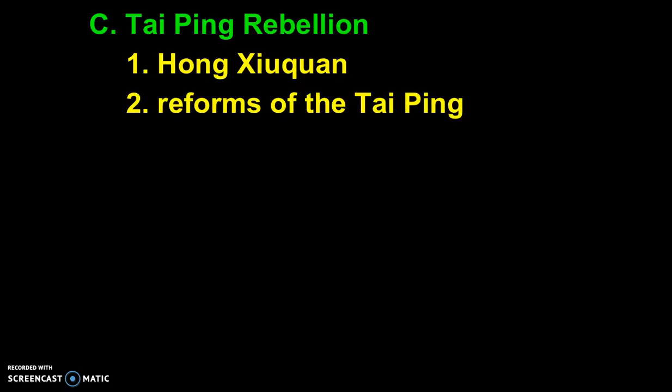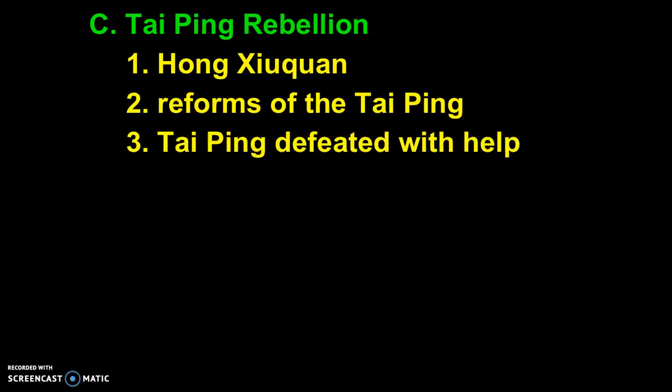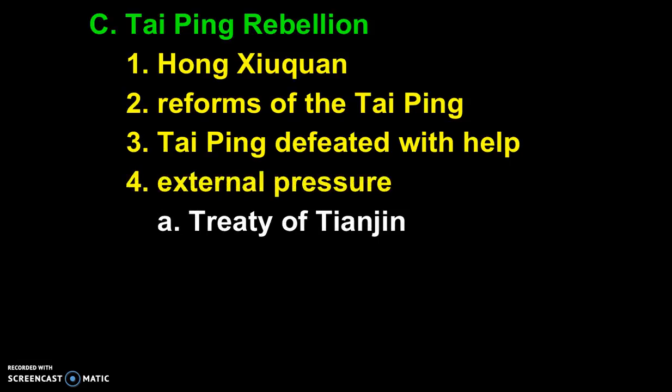The Taiping Rebellion goes on for about 14 years, and for most of those years, the Westerners don't do anything about it — because the longer the Taiping goes on, the weaker China becomes, and the weaker China becomes, the more demands you can make of it. This changes once the Taiping begins to expand close to those ports, which would interfere with trade. Then the foreigners help China defeat Hong Xiuquan and the Taiping. But because of China's weakened state, they end up signing the Treaty of Tianjin, which legalizes the opium trade.